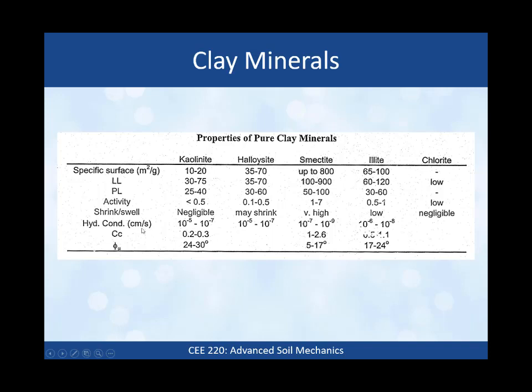Hydraulic conductivities in centimeters per second: kaolinite ranges over two orders of magnitude, 10⁻⁵ to 10⁻⁷, same for halloysite. Smectite is 10⁻⁷ to 10⁻⁹, which is very low hydraulic conductivity. Illite is intermediate at 10⁻⁶ to 10⁻⁸. The coefficient of virgin compression (Cc) tends to be about 0.2 to 0.3 for kaolinite, and as high as 1 to 2.6 for smectite, which is much more compressible. This relates to how the minerals orient themselves — the surface carries a negative charge but the ends have a positive charge, so they orient in an end-to-face configuration with large void space, making them highly susceptible to compression.